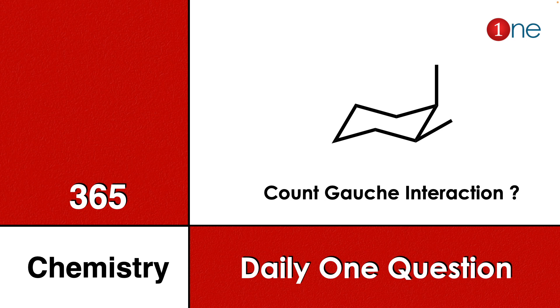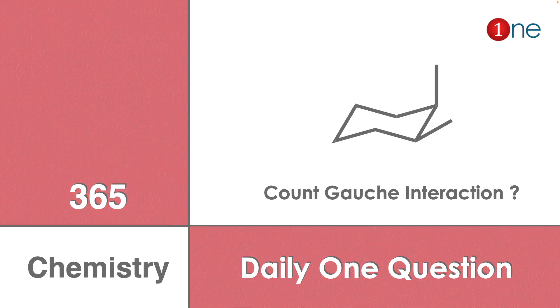Welcome to One Chemistry. This is the 365 Chemistry series — one daily question for you. Here, cyclohexane is given with 1,2-dimethyl groups both in the cis fashion. You have to count the gauche interactions.